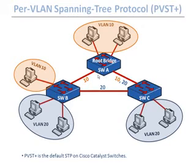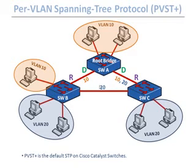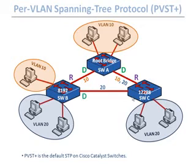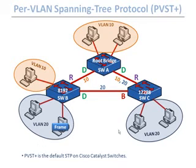If switch B has lower priority than switch C, switch B gets the designated port and switch C gets the blocking port to eliminate the loop. Spanning tree has eliminated the loops and we still have backup. However, a problem arises: if a host on VLAN 20 wants to talk to another host on VLAN 20, it won't be able to because spanning tree is blocking all traffic passing through switch C's port — even though that trunk carries VLAN 20 traffic.